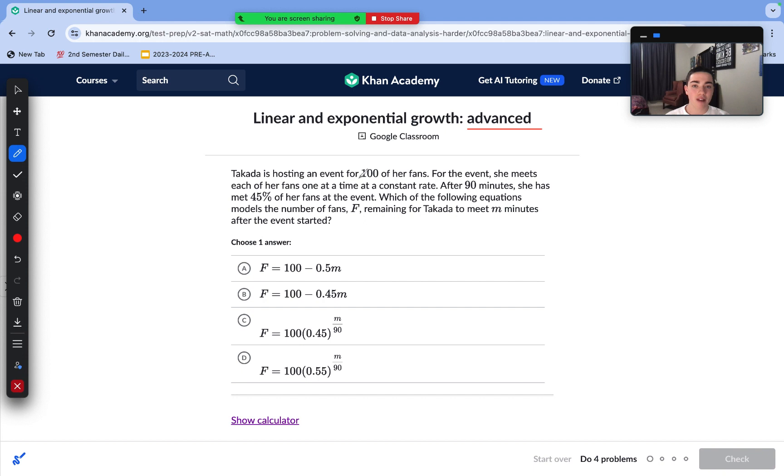So Takeda is hosting an event for 100 of her fans. For the event, she meets each of her fans one at a time at a constant rate. After 19 minutes, she's met 45% of her fans at the event. Which of the following equations models the number of fans F remaining for Takeda to meet M minutes after the event started?